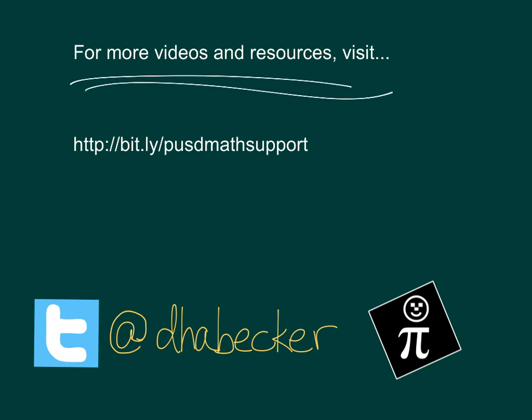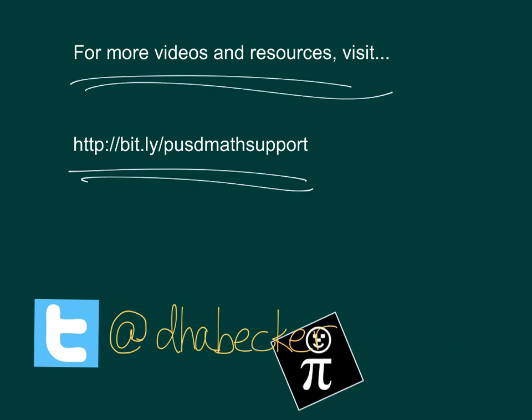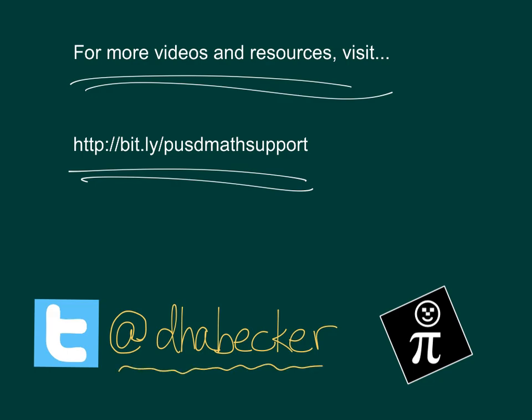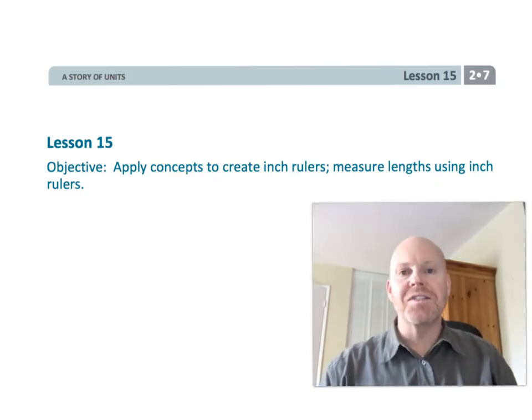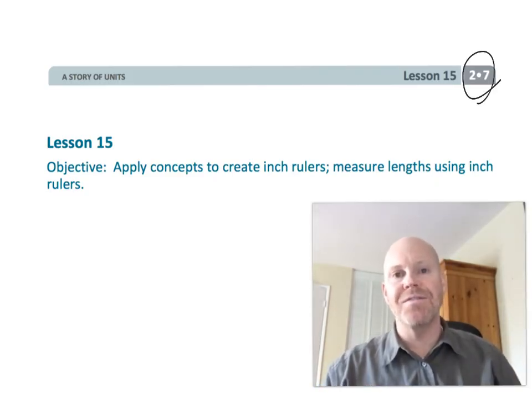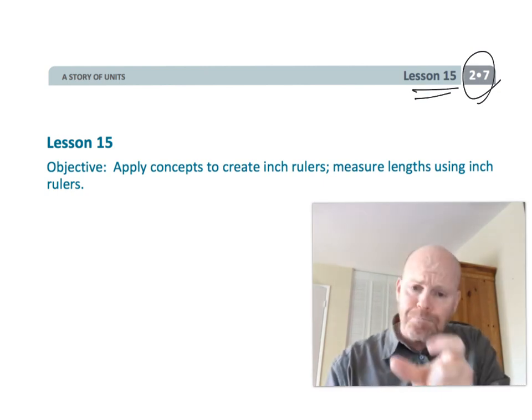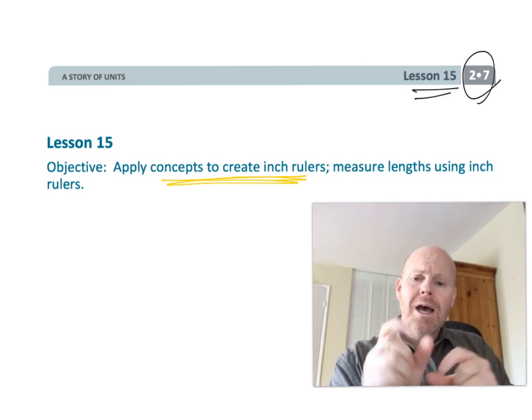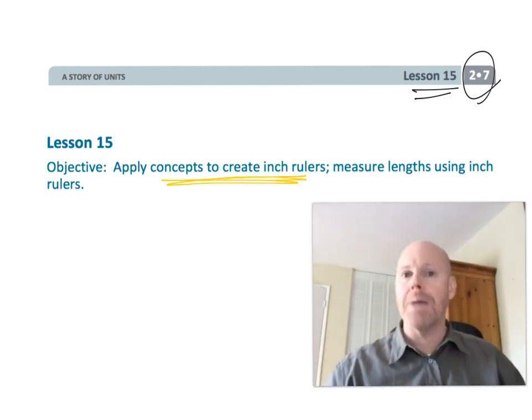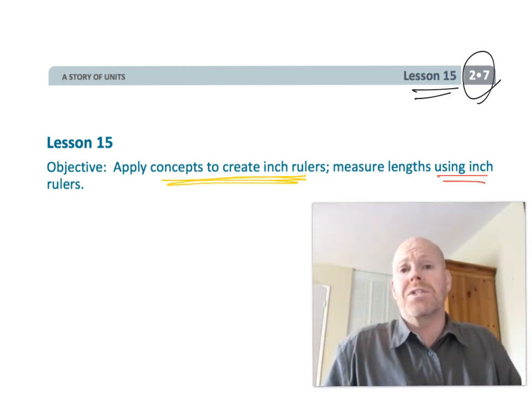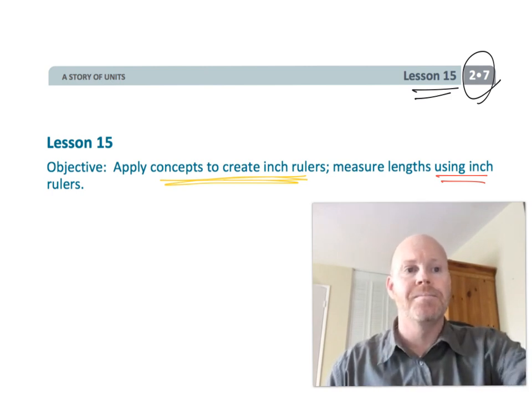Alright, this is second grade module 7 lesson 15. In this lesson students are going to be creating their own rulers by iterating a square inch along a strip of paper and then they're going to be measuring stuff with it. So let's get started.